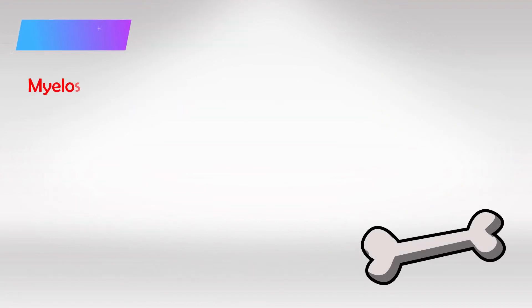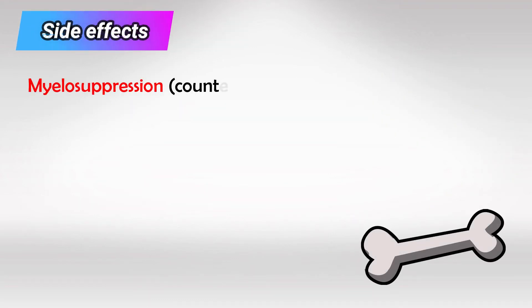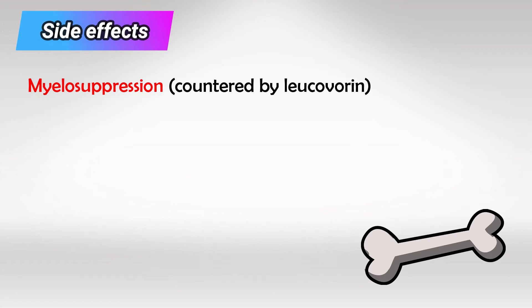The most common side effect is myelosuppression, as bone marrow requires folic acid for DNA synthesis. This can however be countered by taking leucovorin, which is basically a reduced folic acid, so it bypasses the inhibited enzyme dihydrofolate reductase.